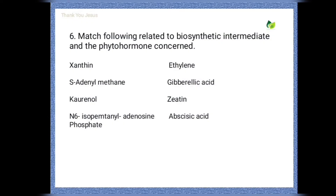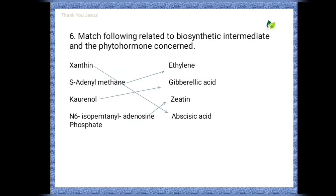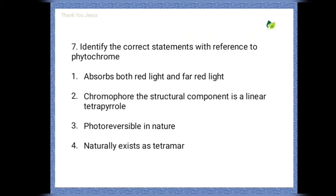Next question: Match the following related to biosynthetic intermediates and phytohormones concerned. The correct matching is: xanthine is matched to abscisic acid; S-adenyl methane is matched to ethylene; geraniol is matched to gibberellic acid; and N6-isopentenyl adenosine phosphate is matched to zeatin.